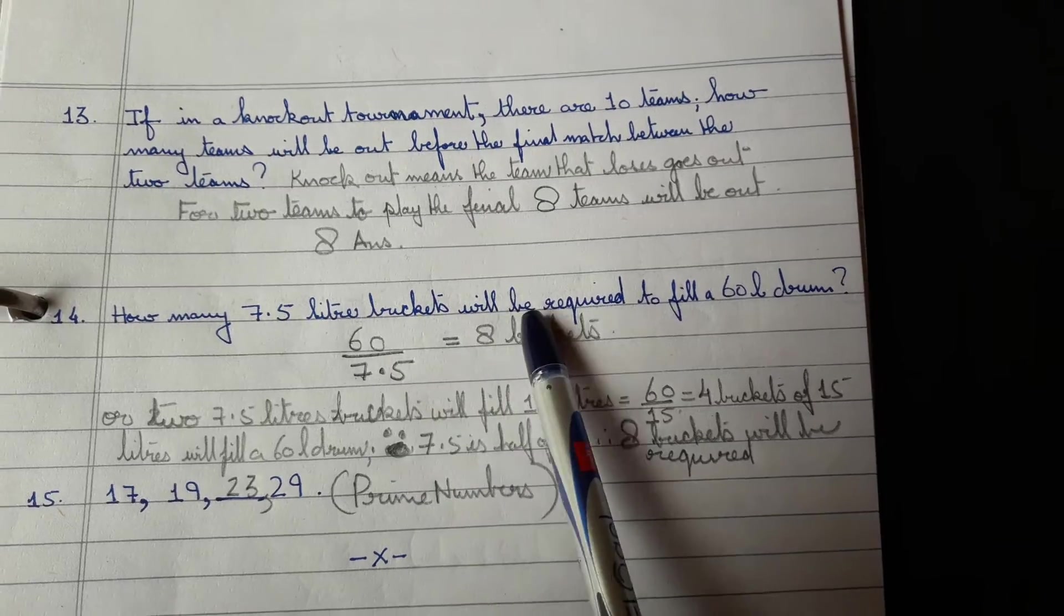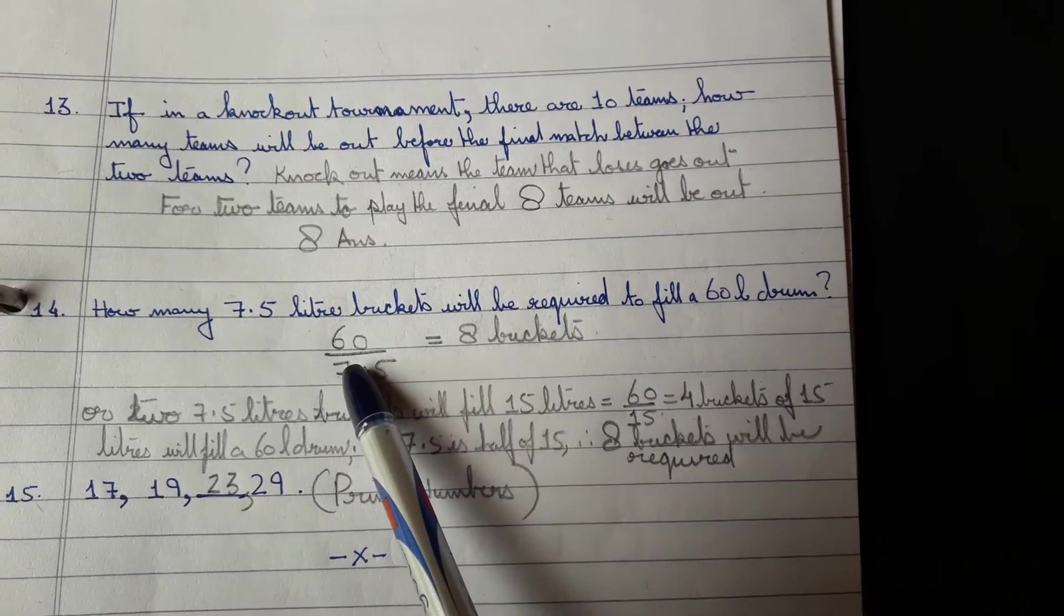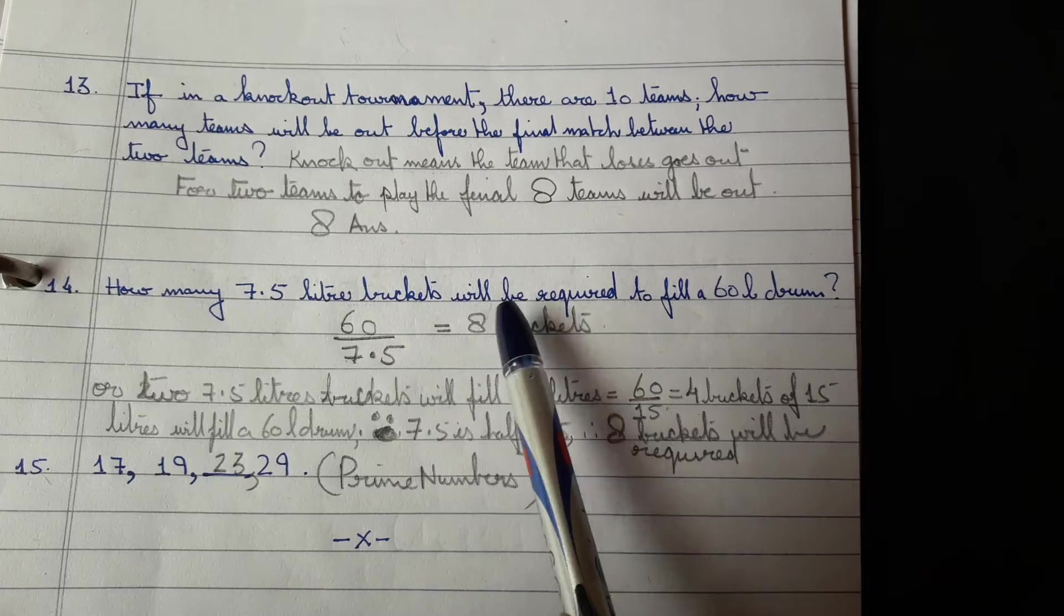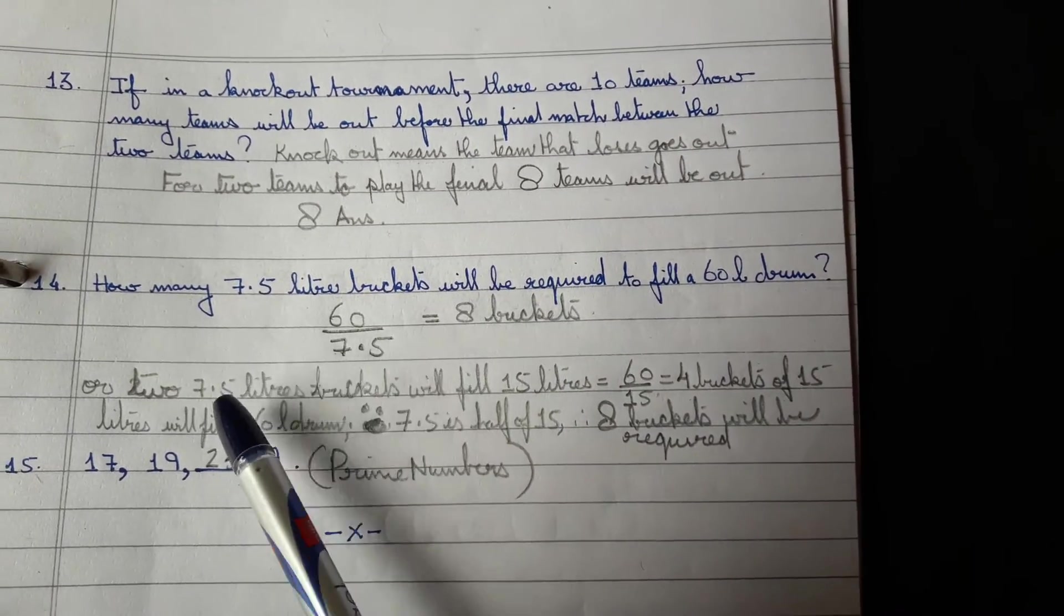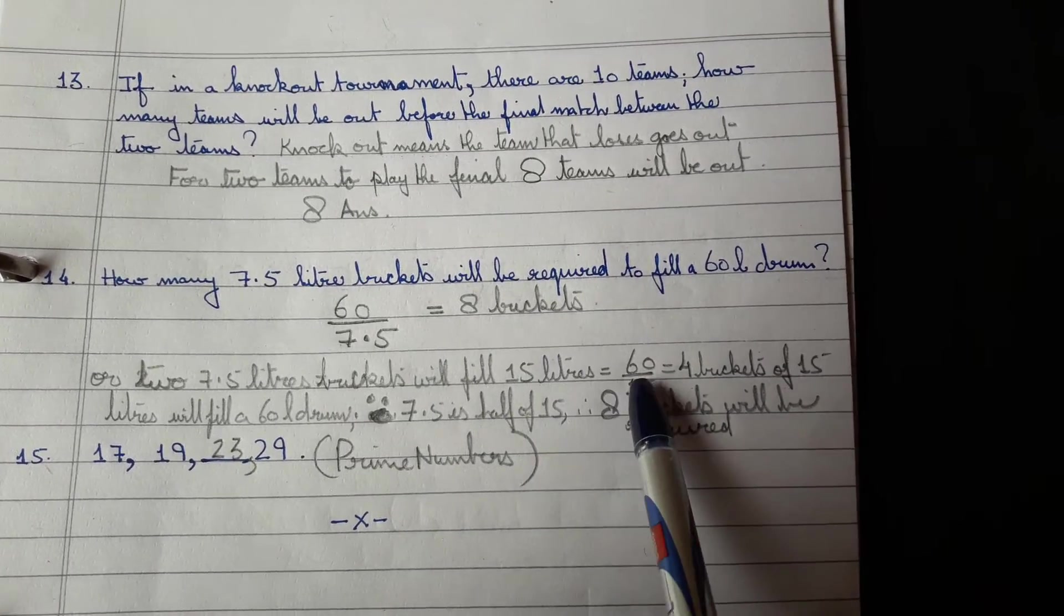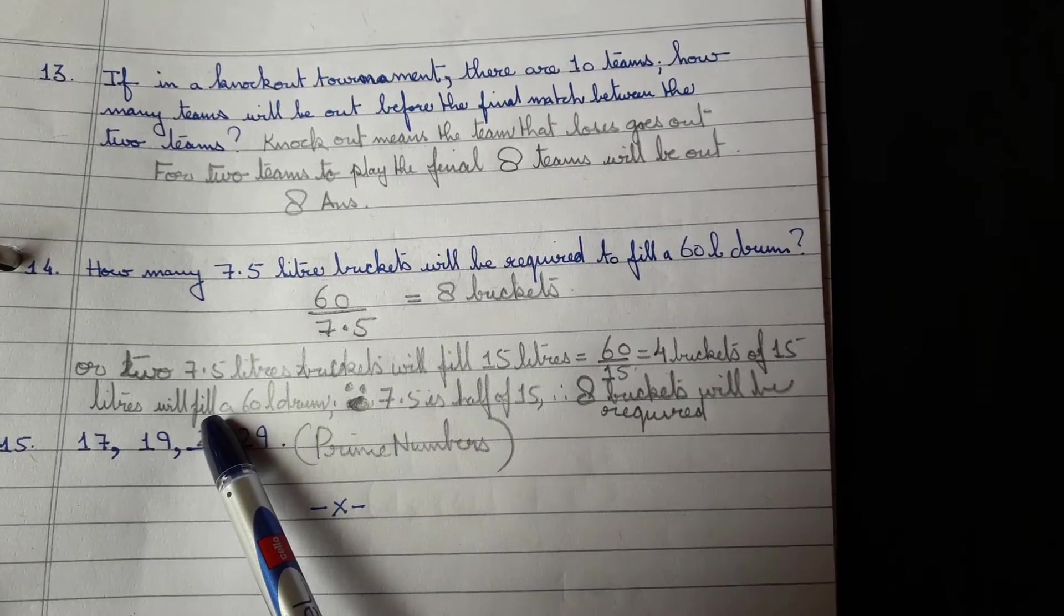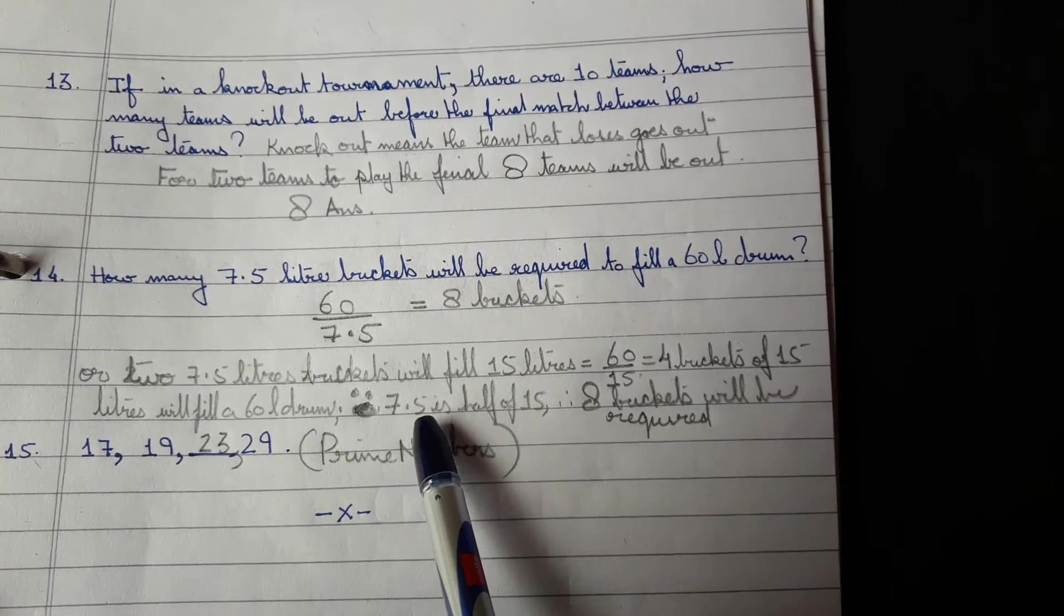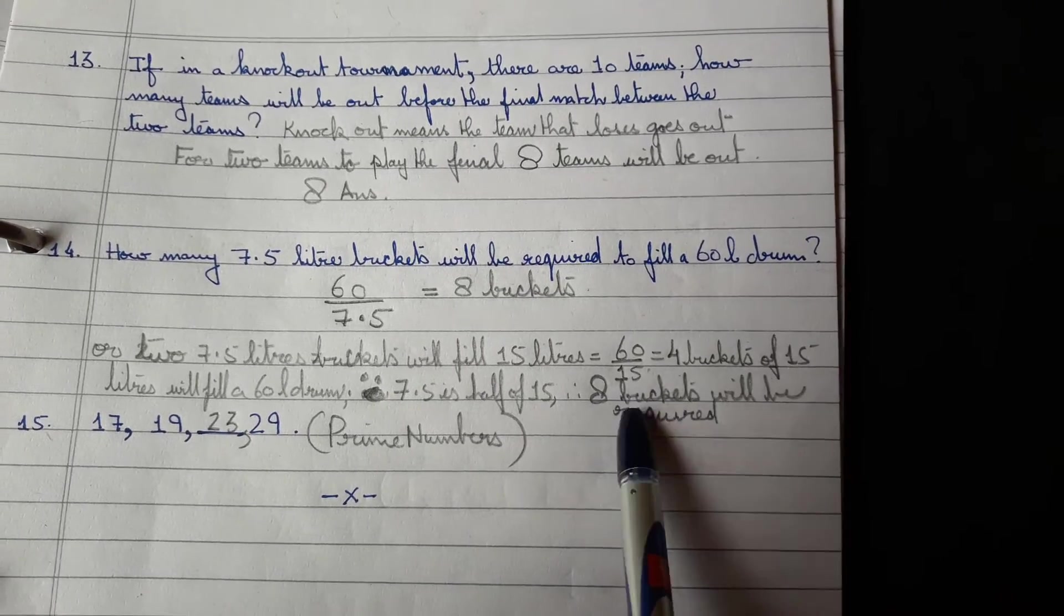How many 7.5 litre buckets will be required to fill a 60 litre drum? Divide 60 by 7.5, so you get 8 buckets. You can multiply 7.5 into 8, you will get 60. Or simply, if you cannot do this, just do a simple method. 2 times 7.5 litres will make 15 litres. So 60 divided by 15 is 4 buckets of 15 litres that will fill a 60 litre drum. So 7.5 is half of 15, so 8 buckets will be required of 7.5 litres.